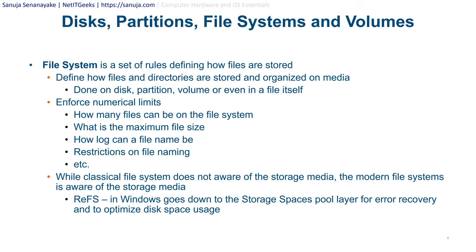The file system is also responsible for enforcing numerical limits. The file system algorithms define how many files can exist at one given time, what the maximum file size is, how long a file name can be, and restrictions on file naming. For example, there may be reserved words you cannot use to create files, and certain characters may not be allowed in file names.